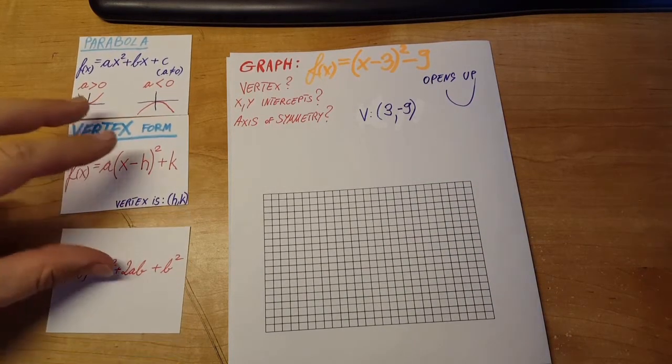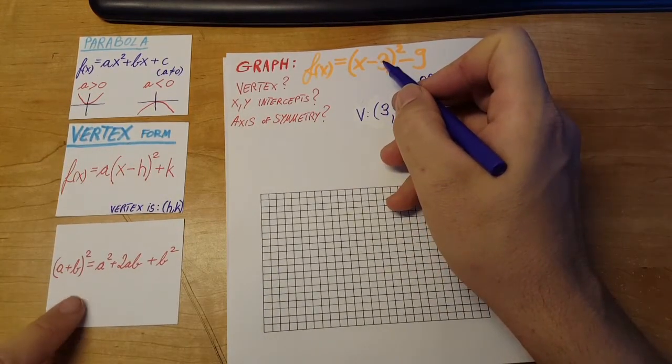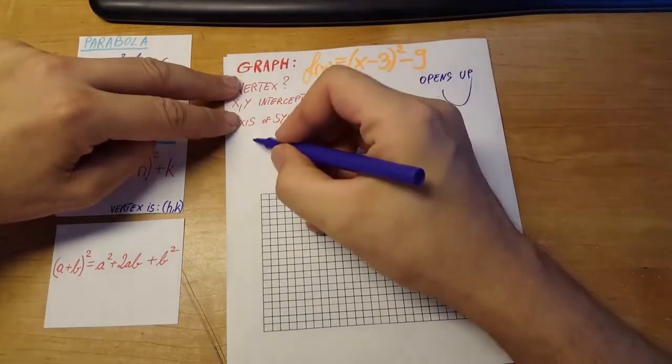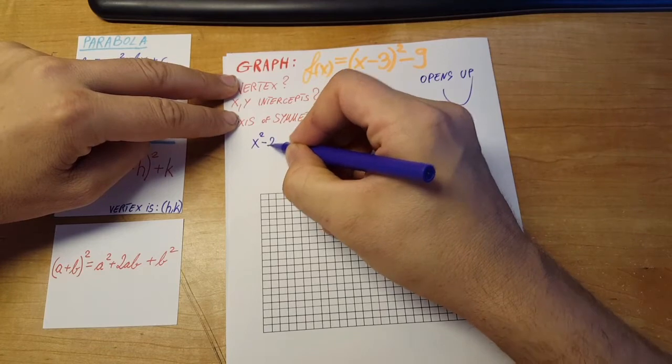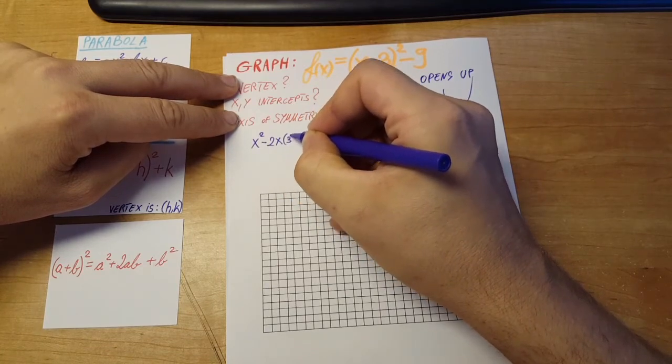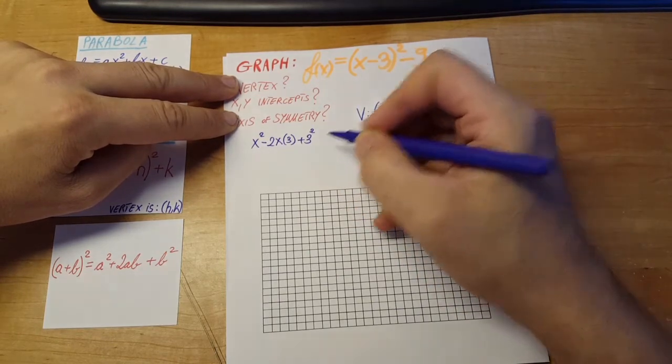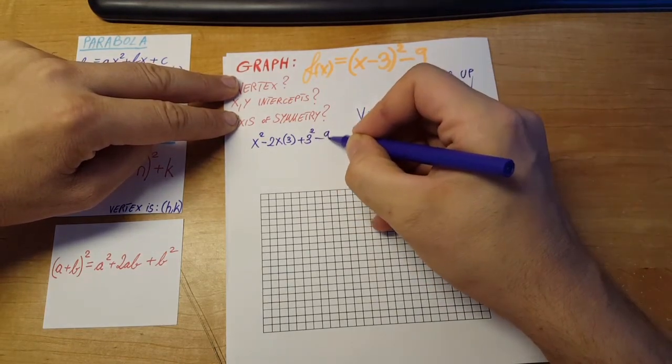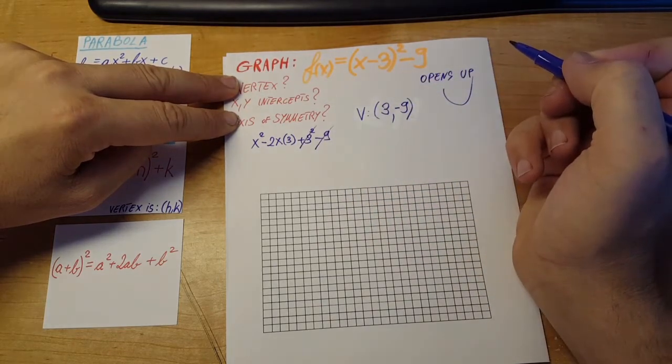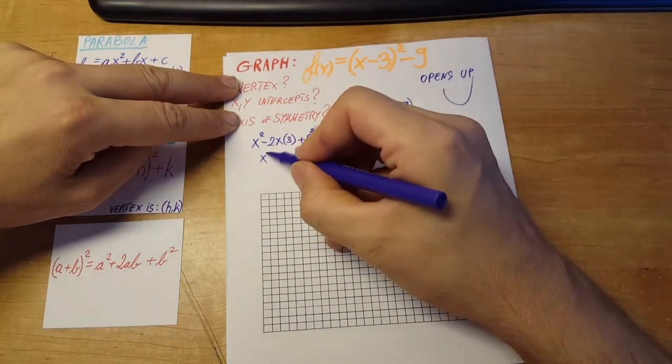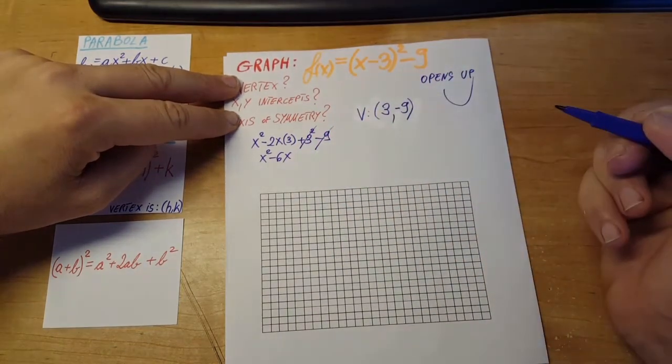Let's look at our intercepts. We're gonna open up the parentheses with this formula. x squared minus 2x times 3 plus 3 squared, negative 9. This will cancel each other out. All we have left is x squared minus 6x.